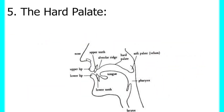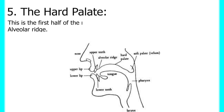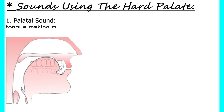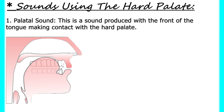Next we have the hard palate. This is the first half of the roof of the mouth, immediately after the alveolar ridge. It is the bony part of the roof of the mouth. The sound produced with the front of the tongue making contact with the hard palate is called a palatal sound. In English we have just one palatal sound — it is the sound for the letter Y.